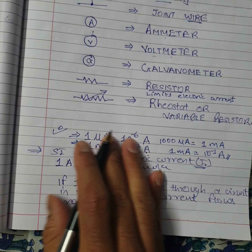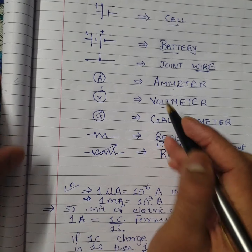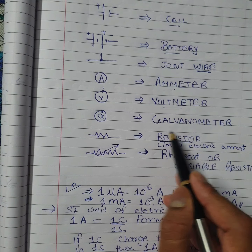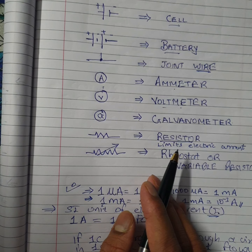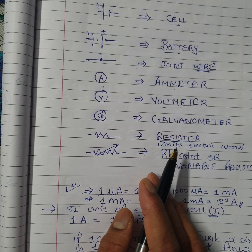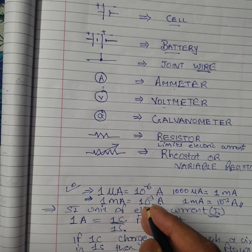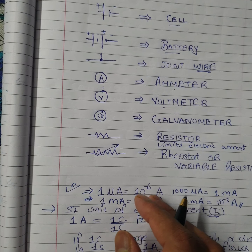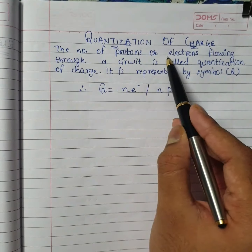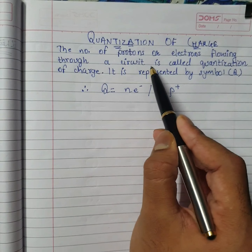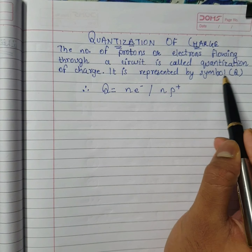You can find different values of current using interconversion. You can draw a circuit schematic using elements such as cell, battery, wire, ammeter, voltmeter, galvanometer, resistor, and rheostat — each having its own significance. We will also study quantization of charge.